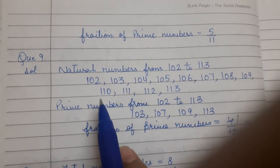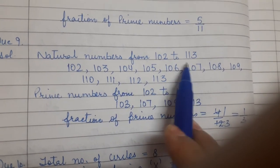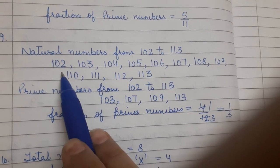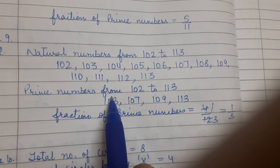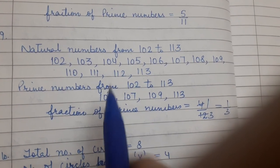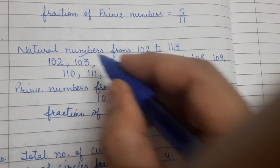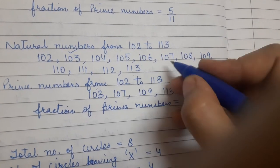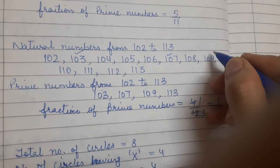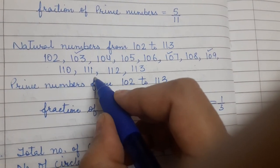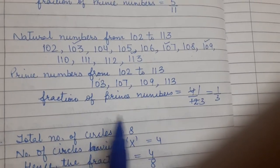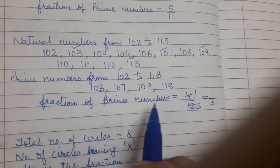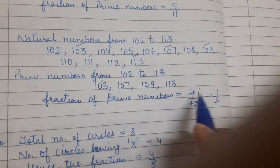Again, 9th question is same. Write the natural numbers from 102 to 113, and then what fraction of them are prime numbers? So first you will write all the natural numbers from 102 to 113. Then you have to find out prime numbers from 102 to 113. So prime numbers are 103, 107, 109, 113. So here 4 numbers are prime numbers among all these natural numbers. So fraction of prime numbers is 4 by 12, and I can reduce it: 4 ones are 4, 4 threes are 12, so it becomes 1 by 3.